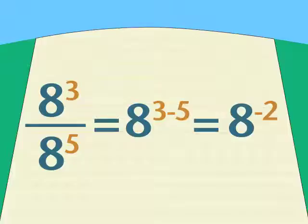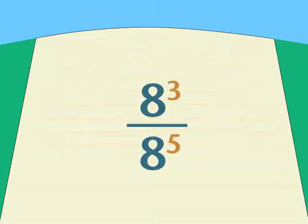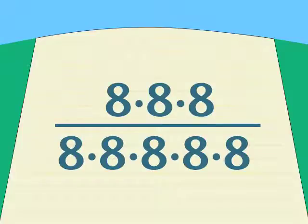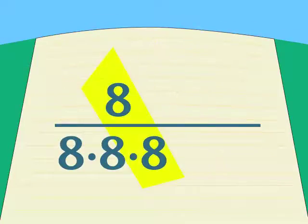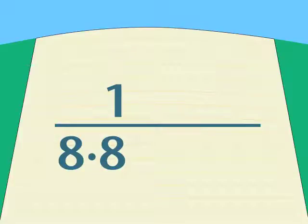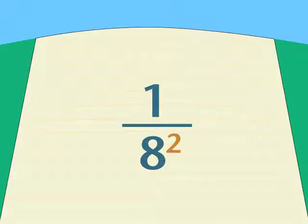So we better find out what it does mean. Let's go back to doing this problem the easy hard way. We already know that 8 to the third over 8 to the fifth can be written like this, and we know we can reduce the fraction by canceling out three of the eights.